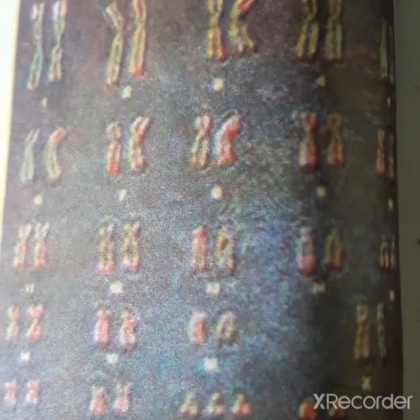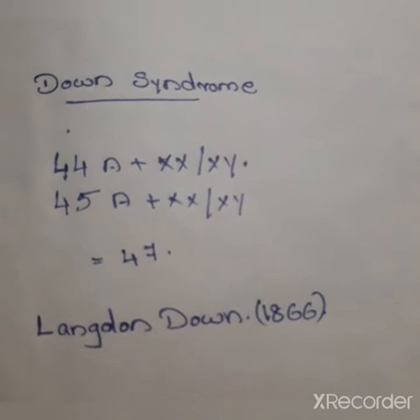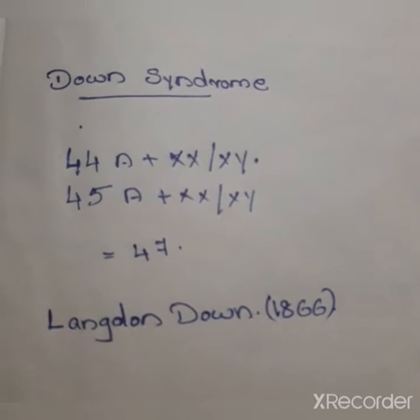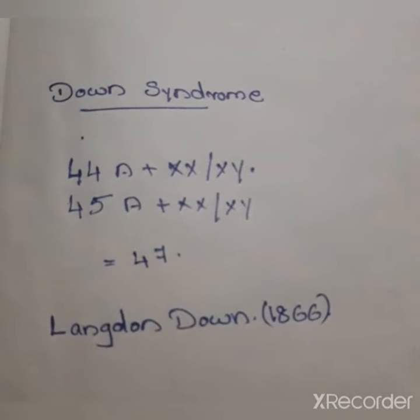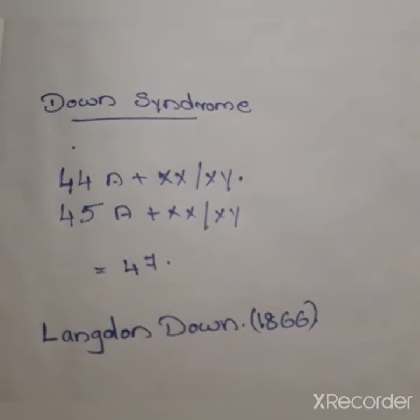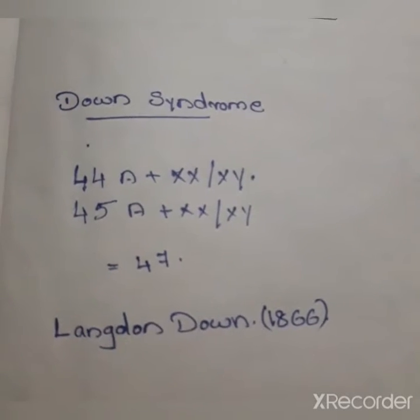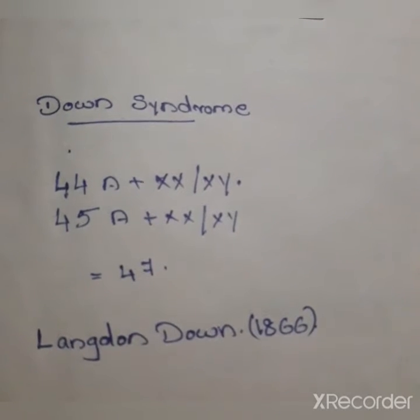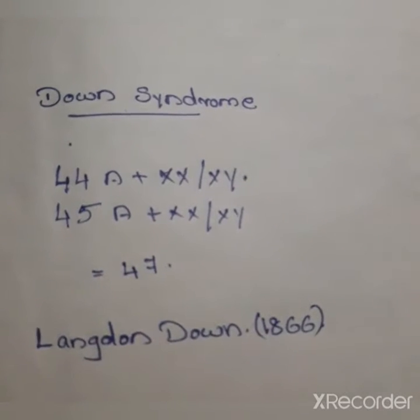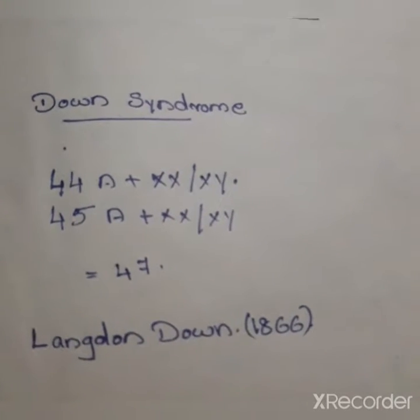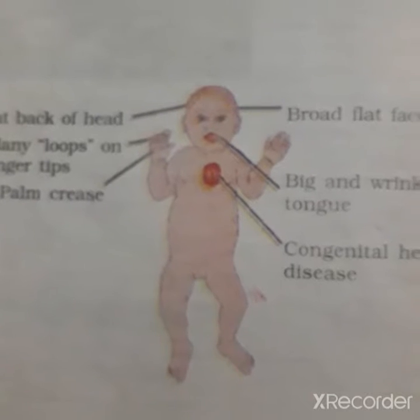The cause of this genetic disorder is the presence of an additional copy of chromosome number 21, called trisomy 21. In 1866, Langdon Down first described this disorder, which is why it is known as Down syndrome.